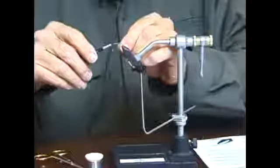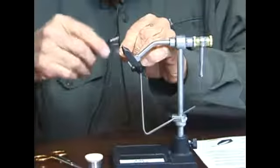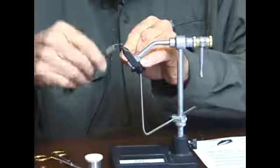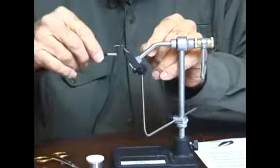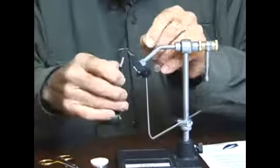Our next step is to build a thread dam in front of the lead wire wraps. Then move it behind the lead wire wraps with another thread dam so the lead wire wraps stay exactly where we want them on the hook shank.